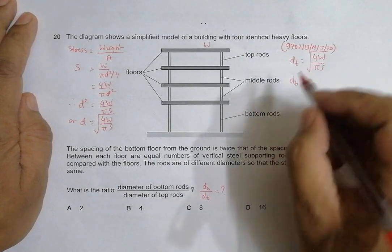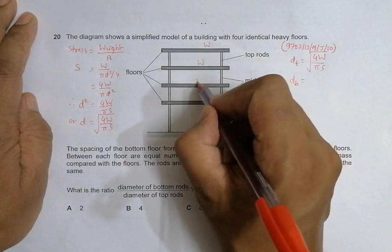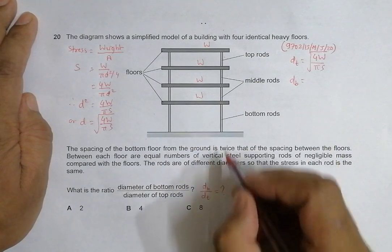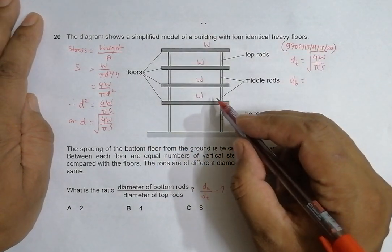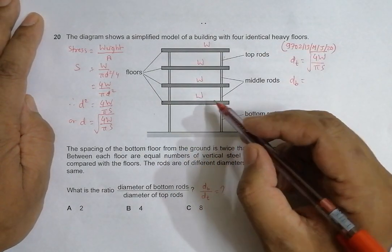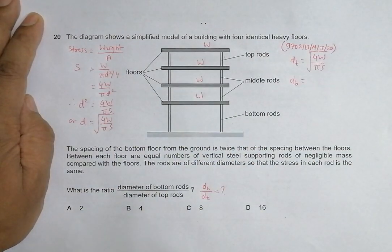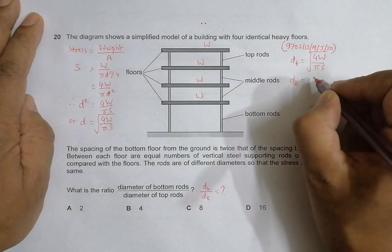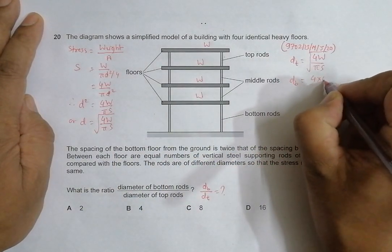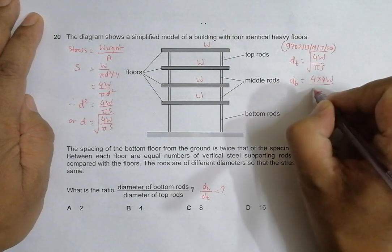Now for the bottom rod, this bottom rod will have to bear 4W because four of these floor platforms are above it. So the weight it has to bear will be equal to 4 times 4W divided by π S. The stress should be the same.